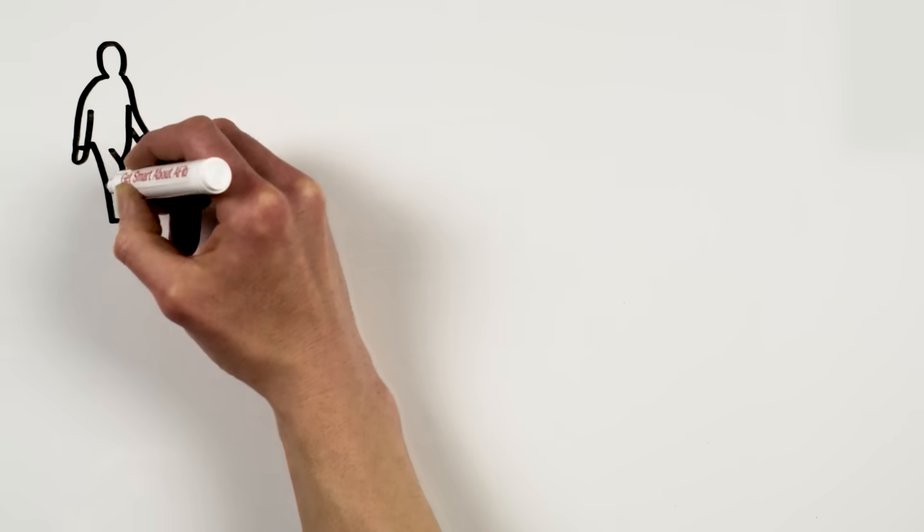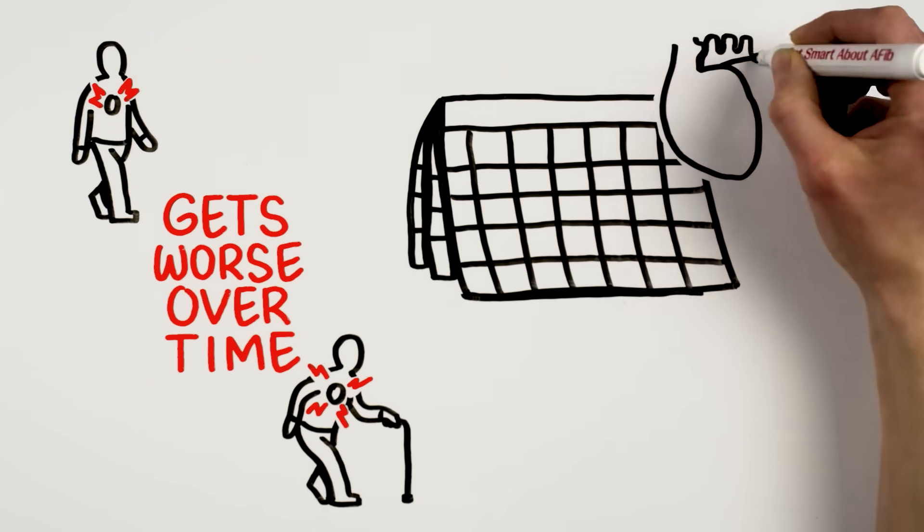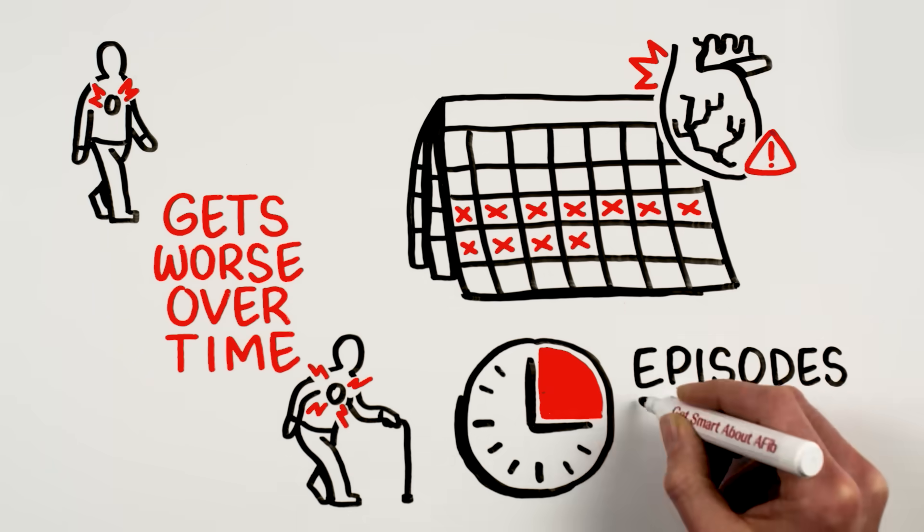AFib is a progressive condition, which means that it gets worse over time. Left untreated, episodes of AFib may occur more often with each lasting longer.